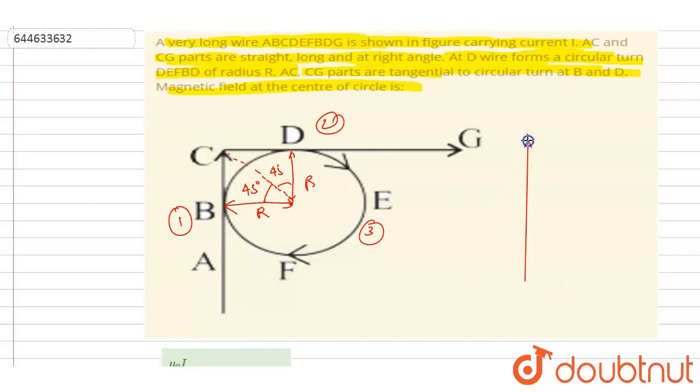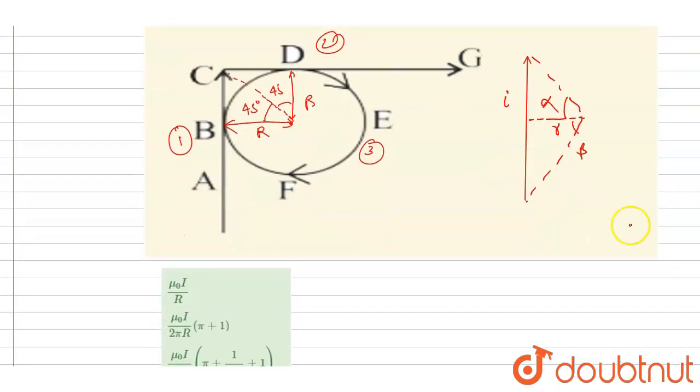Which makes an angle of alpha and beta at a distance of R, if the current is I, then the magnetic field at the point O will be equal to mu_0 I by 4 pi R...